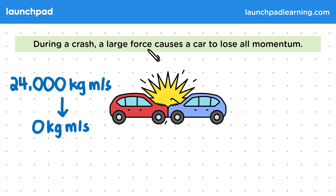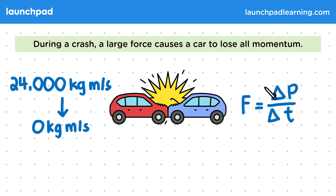A force will cause a change in momentum, and the magnitude of the force determines the rate of change of momentum. We can write this as the equation F = Δp/Δt, where the delta symbol means 'change in'. In the crash, the change in momentum is very large, and it happens in a very short time, so the reaction force causing this will be extremely large.